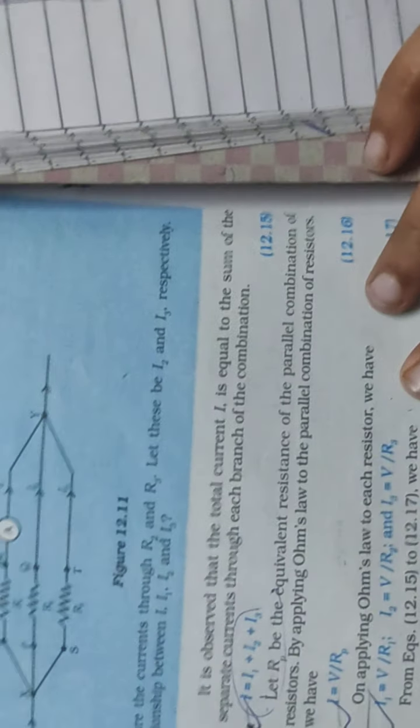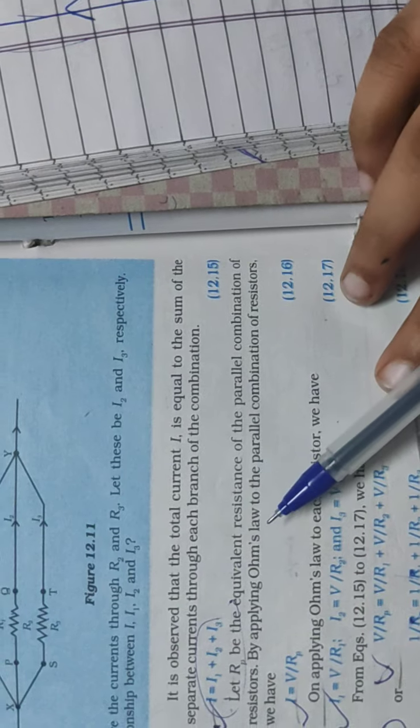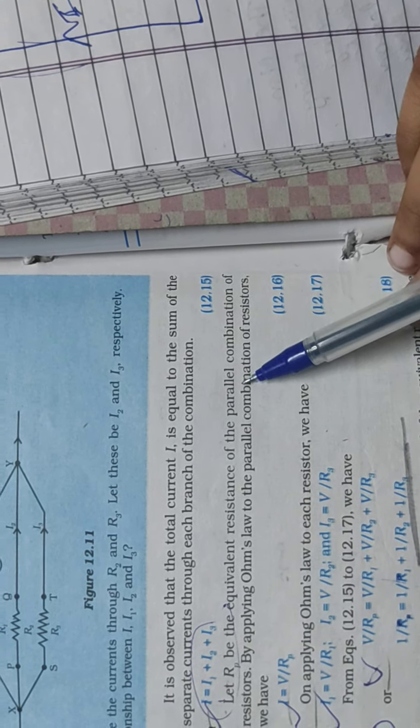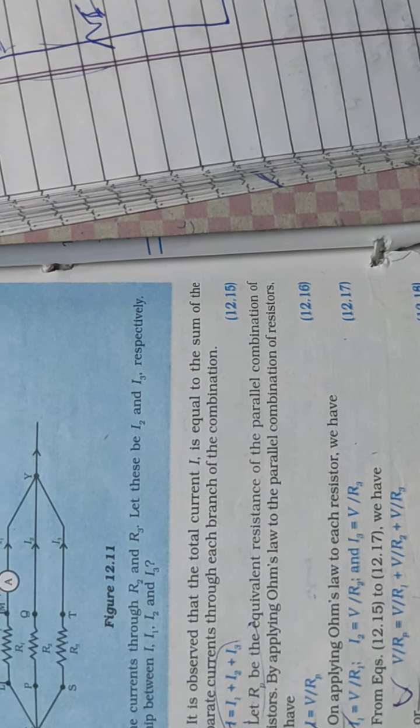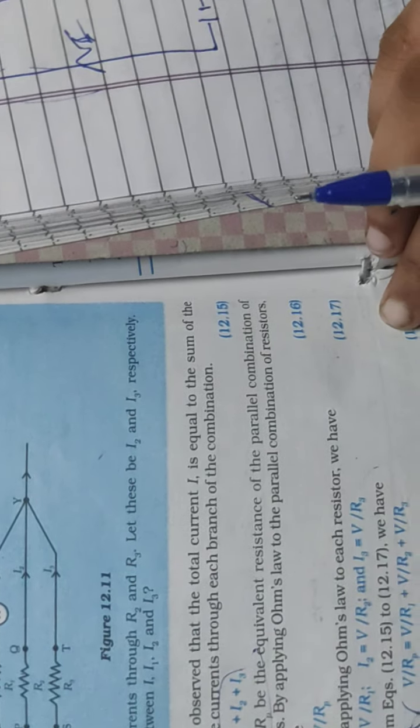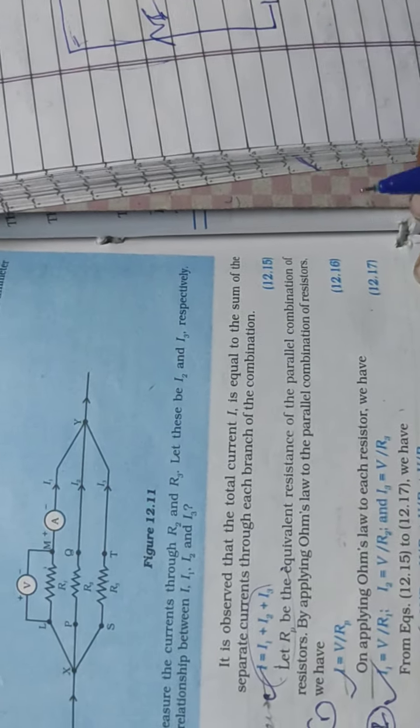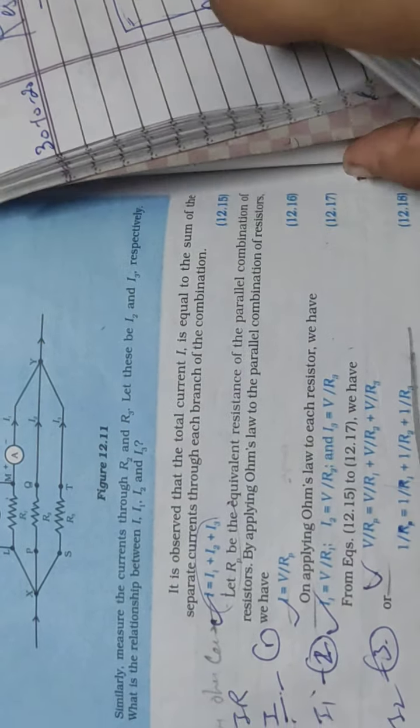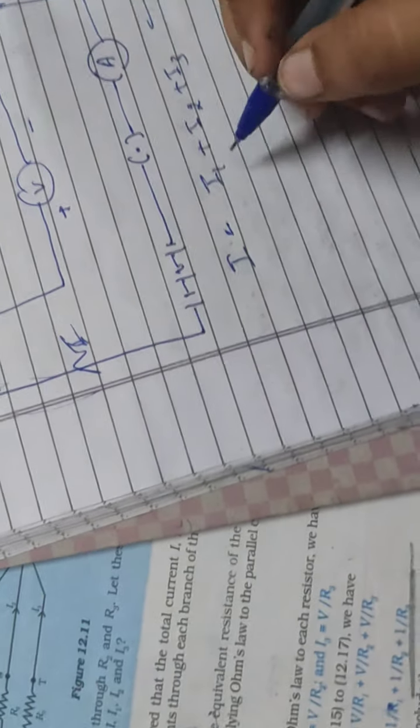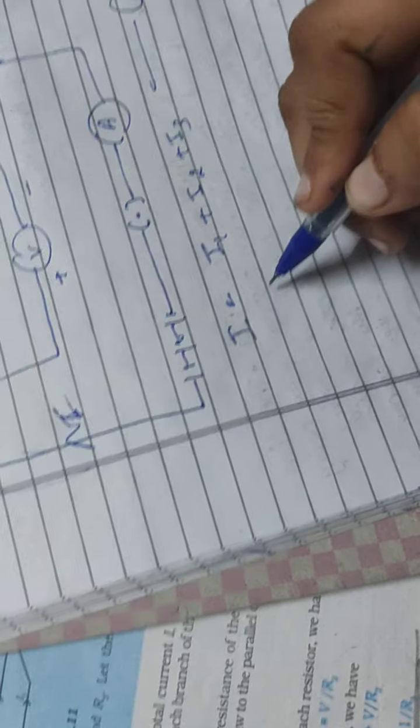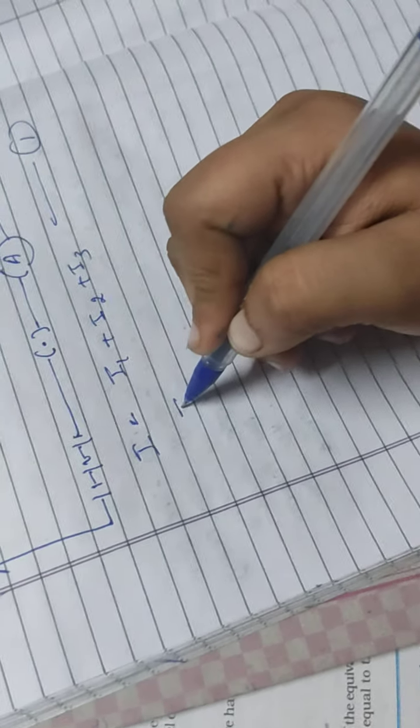So let's take equation number 1. Let Rp be the equivalent resistance of the parallel combination of resistance. By applying Ohm's law.